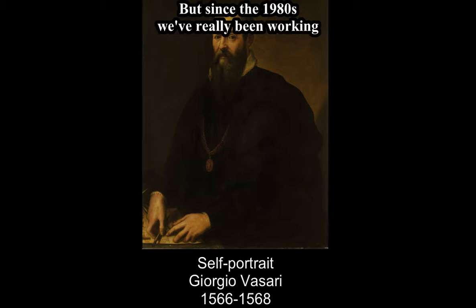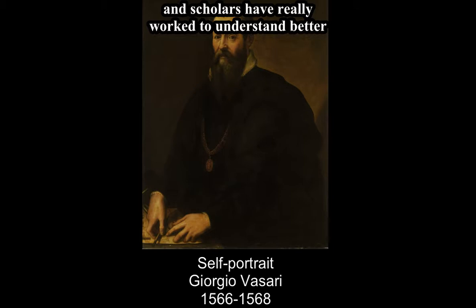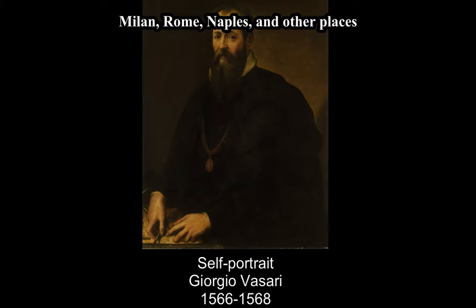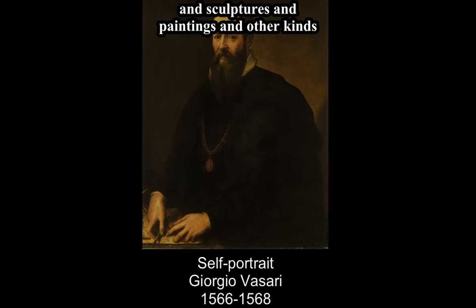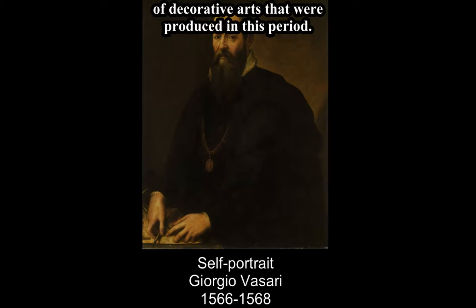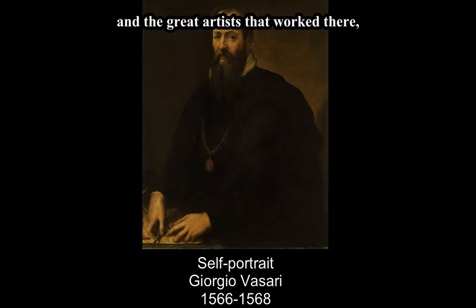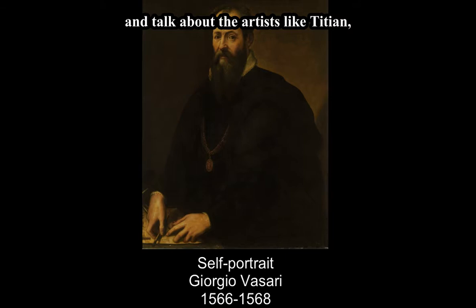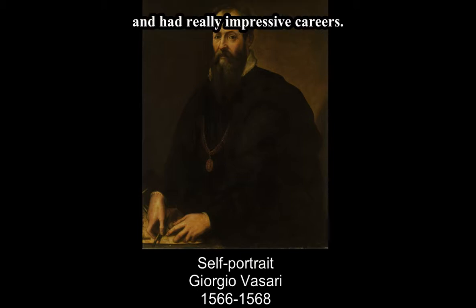But since the 1980s, we've really been working to move away from just looking at Vasari and trusting what he tells us. Scholars have really worked to understand better the art produced in cities like Venice, Milan, Rome, Naples, and other places where there were very important artists and artistic movements — some really amazing buildings, sculptures, paintings, and other kinds of decorative arts. In this class, we will certainly learn about Florence, but we will absolutely move away from Florence and talk about artists like Titian and Leoni Leoni, who were working outside of Florence and had really impressive careers.